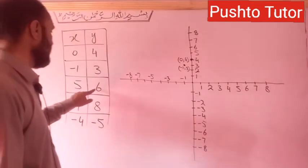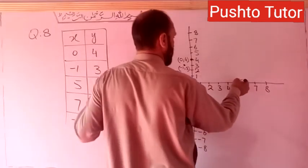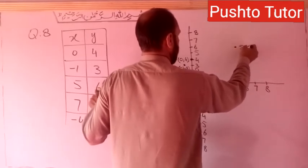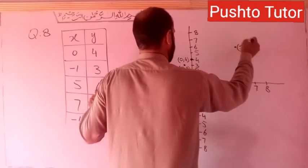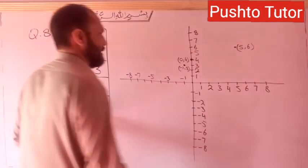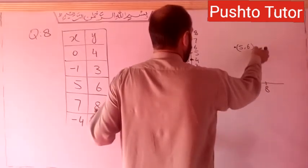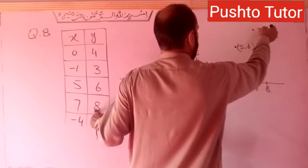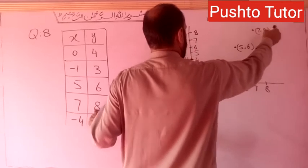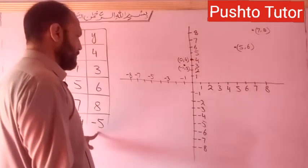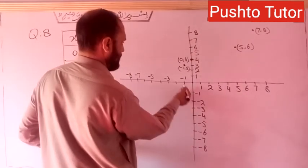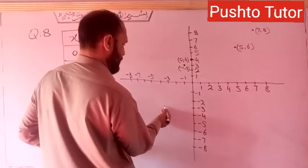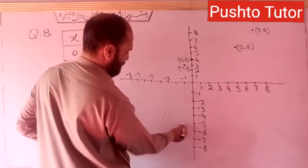Next we have (5, 6): x-axis is 5 and y-axis is minus 6. Then (7, 8): x-axis is 7 and y-axis is minus 8. Then (-4, -5): x-axis is minus 4 and y-axis is minus 5.